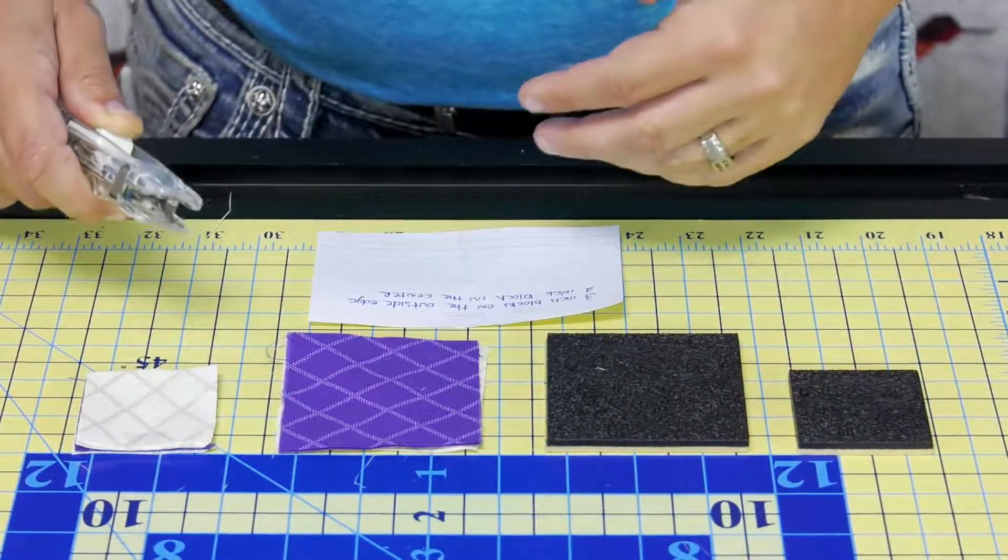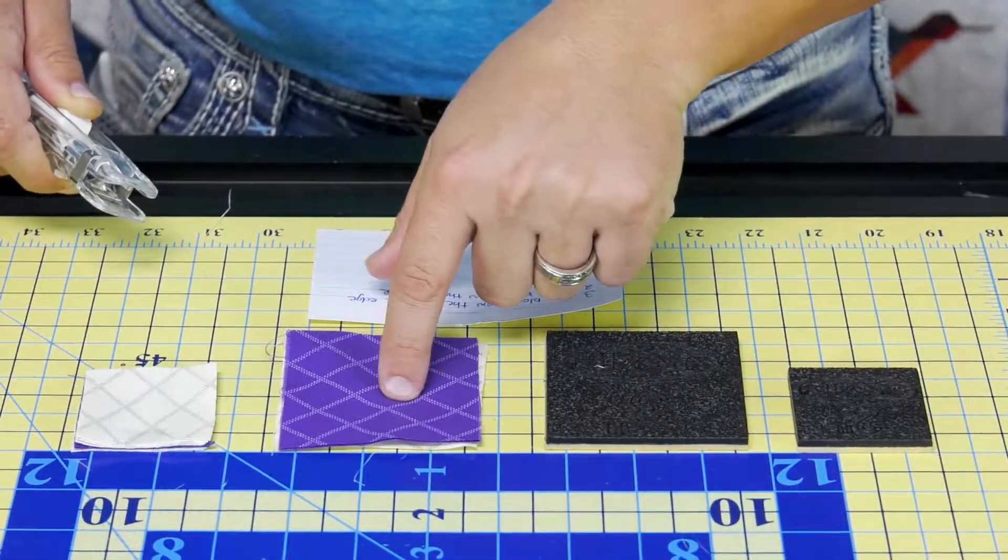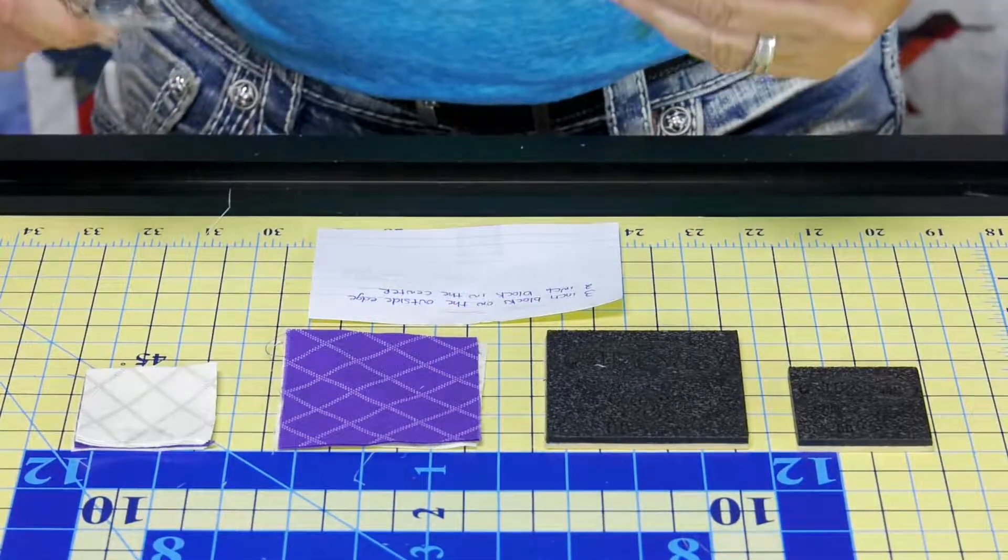We all know once we cut our quilt, we don't necessarily sew them together right there and then. As you can see here, I have my three-inch quilt block. I've already cut my fabric. Now, I have to remember where this goes in my quilt.